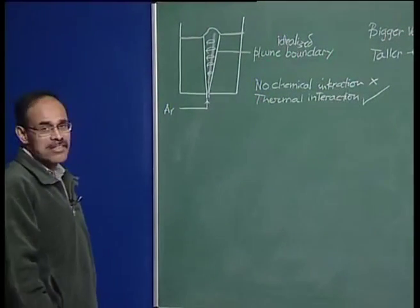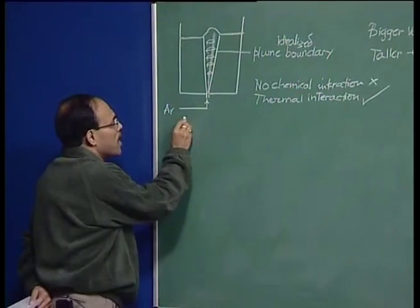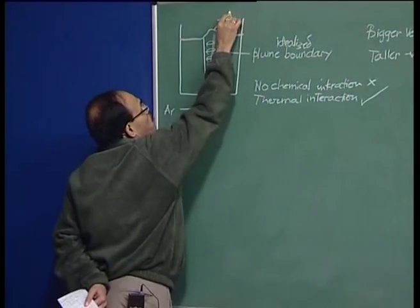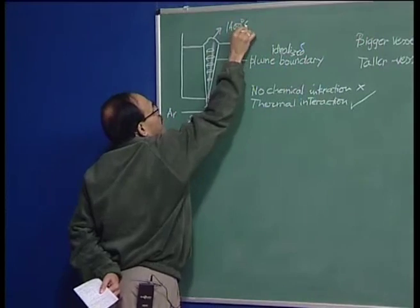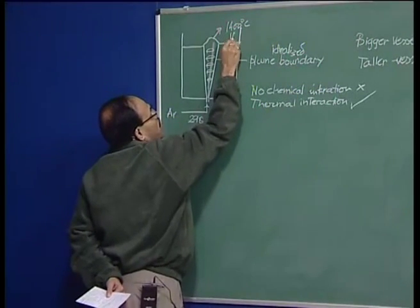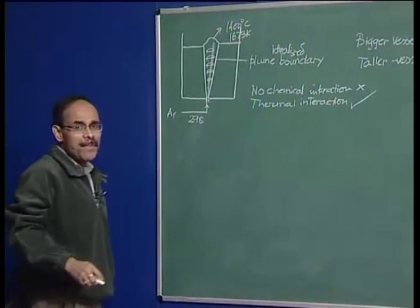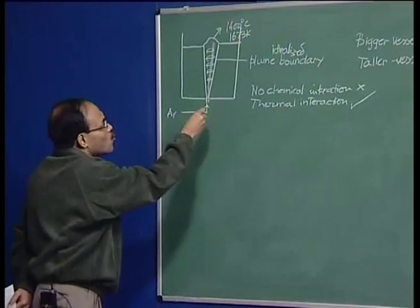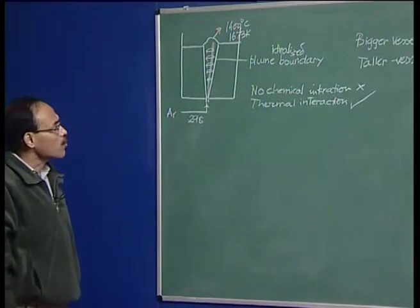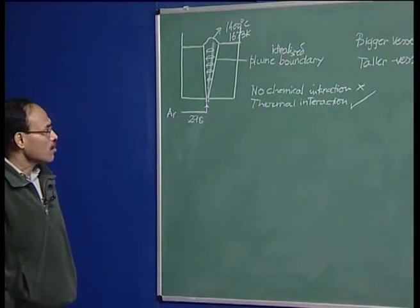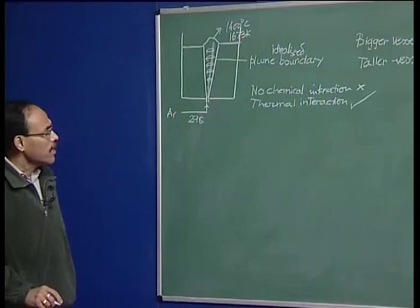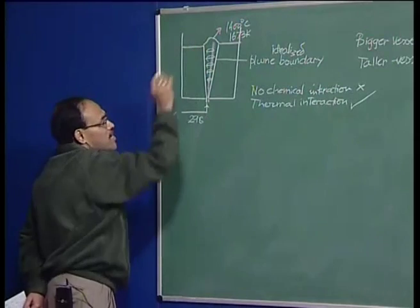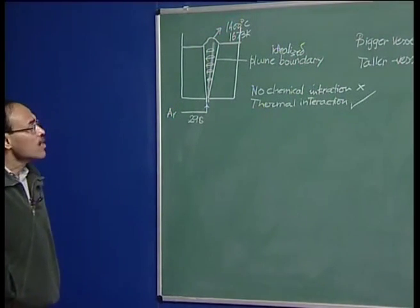There might be a misconception that since argon is introduced into the system at 298 K and leaves the system at close to 1400°C or 1673 K, a lot of heat is being taken out by the gas, causing some kind of chilling effect on the metal. However, a simple calculation can show that the rate of temperature drop of the melt because of the rise in gas temperature is really not significant.